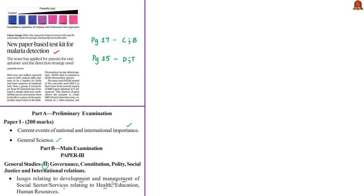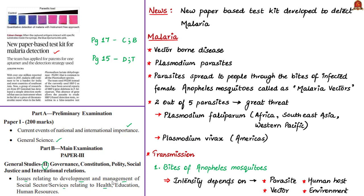Before discussing the news article, let us see about malaria in brief. Malaria is a vector-borne disease caused by Plasmodium parasites, spread to people through the bites of infected female Anopheles mosquitoes, which are called malaria vectors. There are five parasite species that cause malaria in humans, but only two pose the greatest threat: Plasmodium falciparum and Plasmodium vivax. Plasmodium vivax is common in the American continents, while Plasmodium falciparum is common in Africa, Southeast Asia and the Western Pacific.